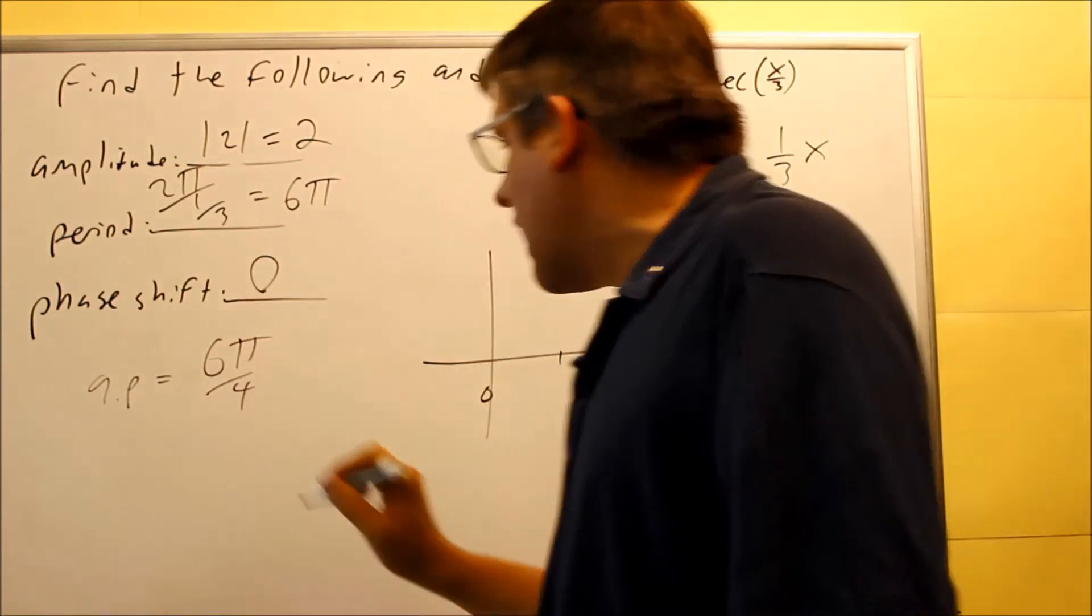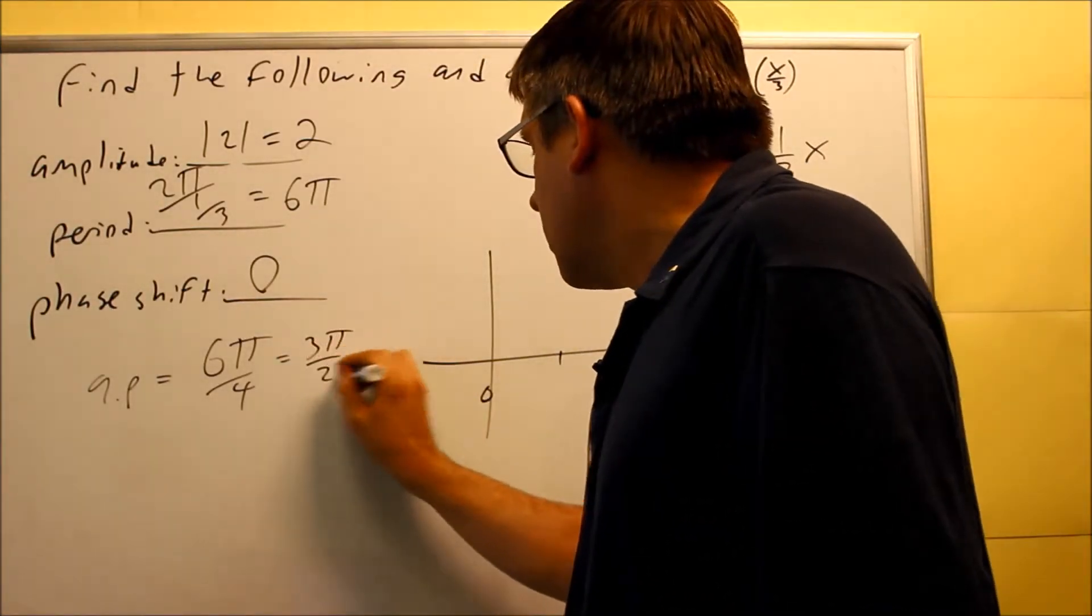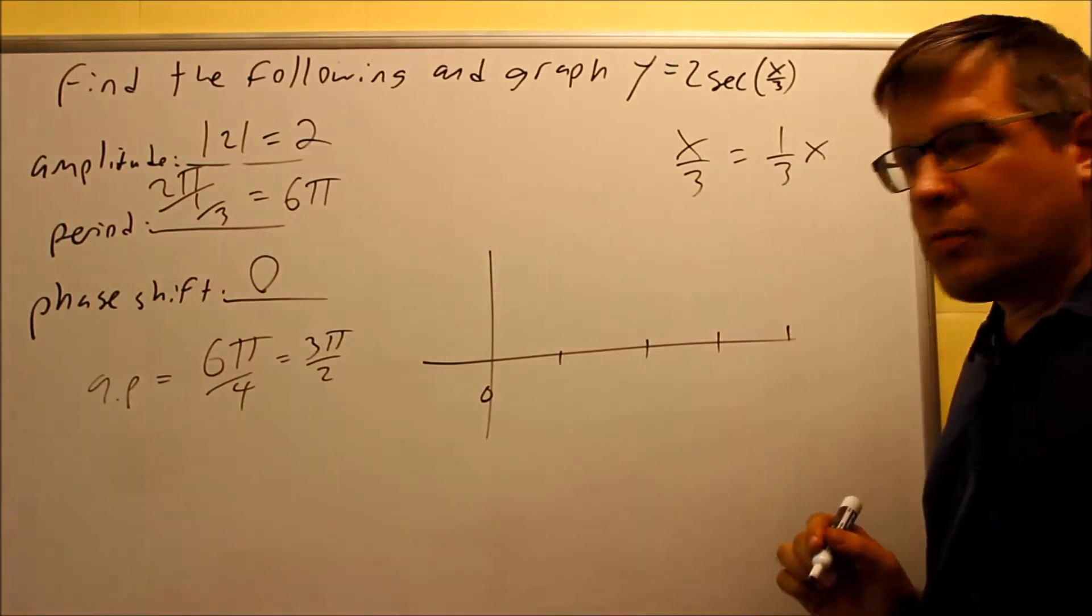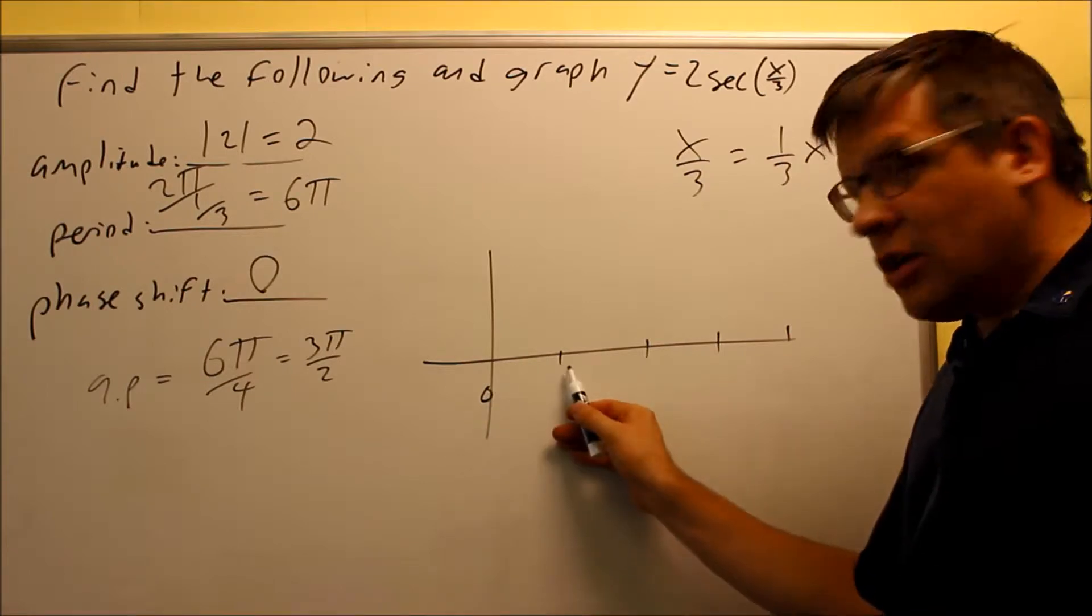So in this case, I have 6π over 4. And I can reduce that to 3π over 2. So 3π over 2 would be the amount that I'm going to add from here to here.